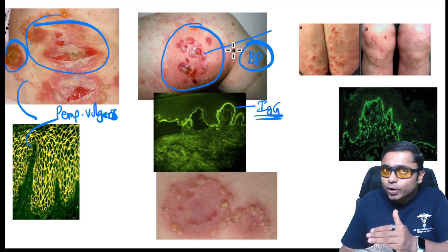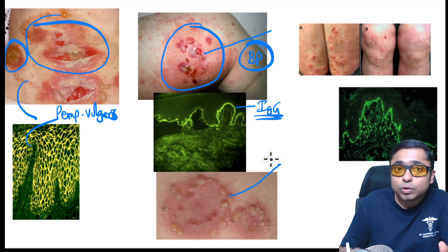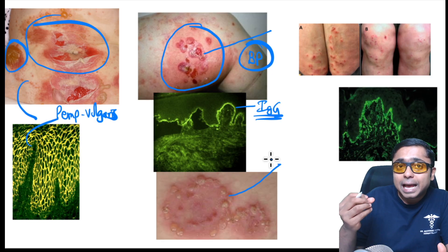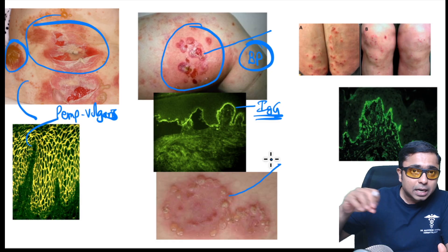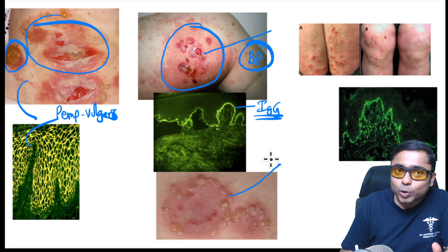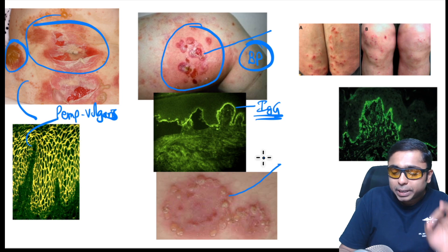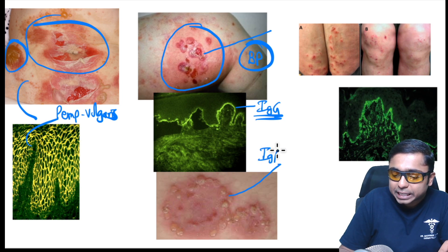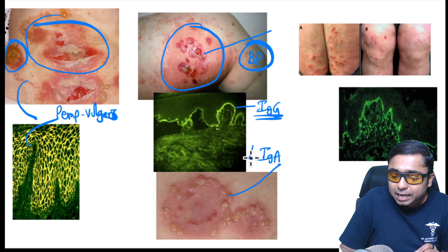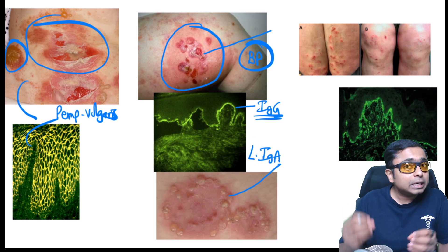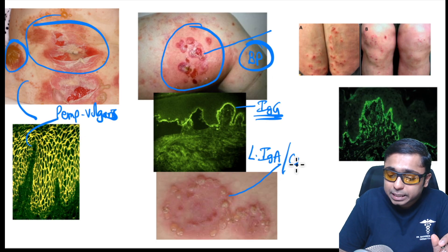Below is another characteristic lesion described as a 'crown of jewels' or cluster of jewels appearance — a subepidermal blistering disorder with vesicles surrounding an annular lesion. Direct immunofluorescence shows linear deposition of IgA. This is linear IgA disease, also called chronic bullous dermatosis of childhood (CBDC).